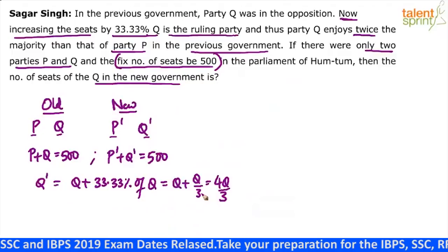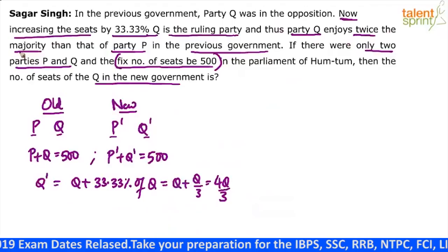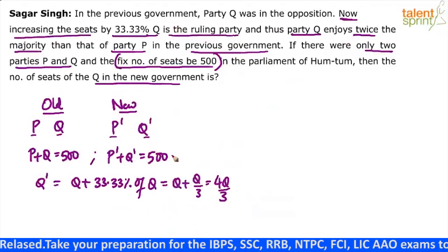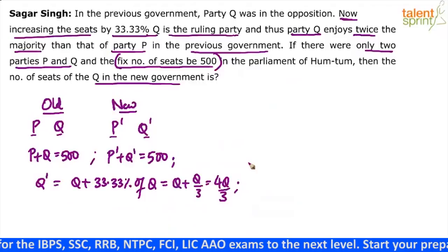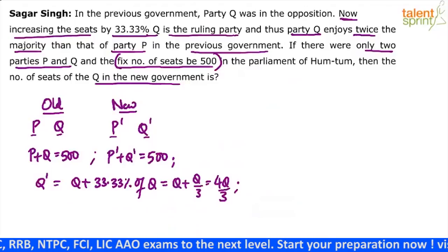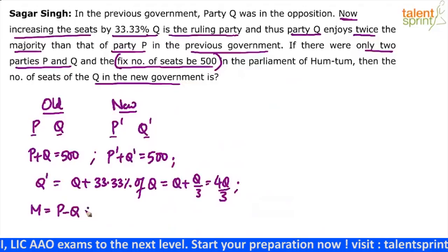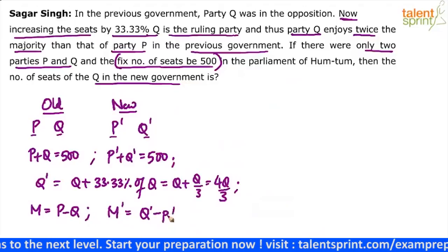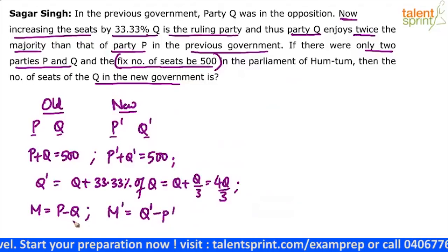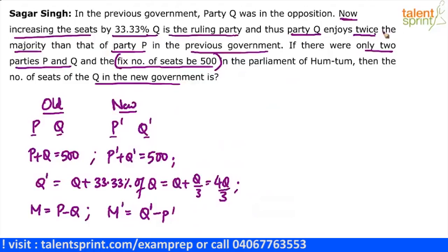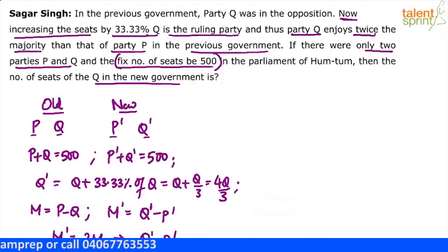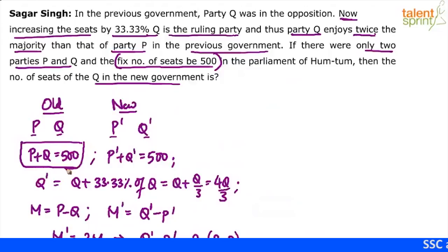Party Q enjoys twice the majority than party P in the previous government. Majority is the difference between the votes or seats obtained by the winner and the loser. So the majority in the previous case was P minus Q because P was more than Q. The majority in the new case will be Q dash minus P dash because here Q is more than P — it should be positive. The point given in the question is this majority is twice the earlier majority: Q dash minus P dash equals twice of P minus Q. This is the fourth equation.